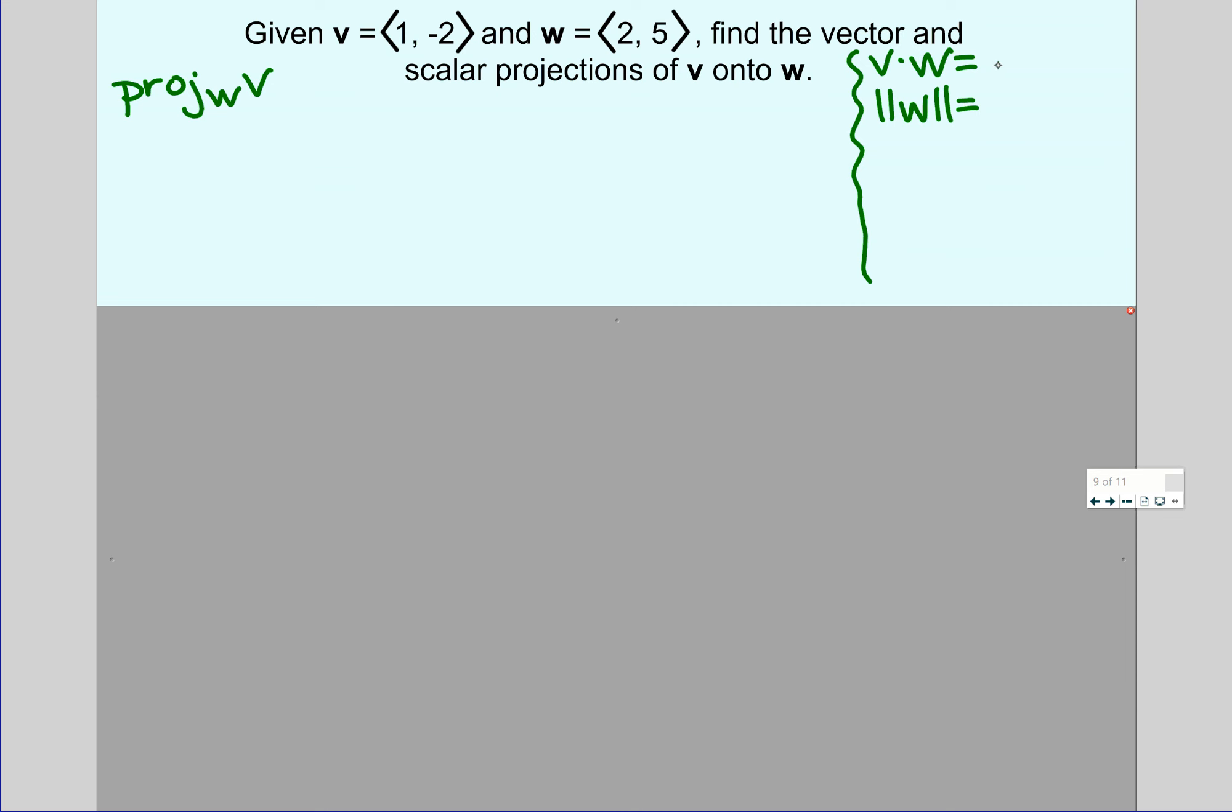Dot product: multiply the first components, 1 times 2. Multiply the second components, negative 2 times 5. Grand total of negative 8, 2 and negative 10. Magnitude of W. That's just our little Pythagorean theorem. Square root, 2 squared and 5 squared, which gives me rad 29.